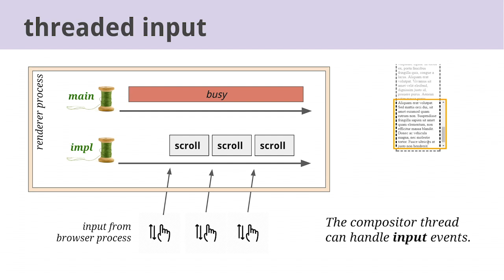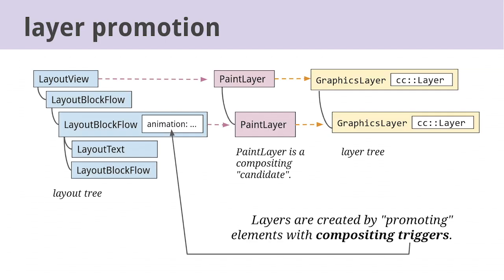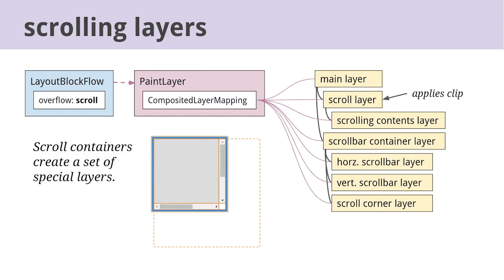The browser process gets input from the operating system — say the user moves their finger on the touch screen — and it forwards that to the renderer process where the compositor thread gets the first crack at handling it. If it's just scrolling a composited layer, the compositor can do that without even talking to the main thread, because it already has the rastered output of that layer. But in some cases — like if you scroll something that doesn't have a layer, or you have blocking JavaScript event listeners — the compositor thread will forward that input to the main thread, which takes longer because the main thread is busy. Composited layers are represented by a graphics layer class in Blink, which wraps a CC layer (CC stands for Chromium Compositor). Today the layers are created from the layout tree by promoting things with certain style properties like animation or transform. There's also an intermediate step called the paint layer tree — paint layers are candidates for layer promotion, but not every paint layer necessarily gets a composited layer.